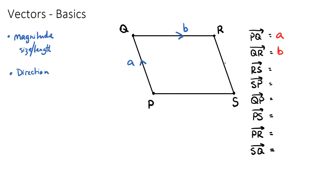What about R to S? There's no direct vector defined, but a vector is a journey with a magnitude and a direction. From R to S it looks like it's the same distance as Q to P because it's a parallelogram, but we're going in the opposite direction. So R to S is the same as vector a but in the opposite direction — that makes it negative a. And S to P would be the same as vector b but in the opposite direction, so that's negative b.